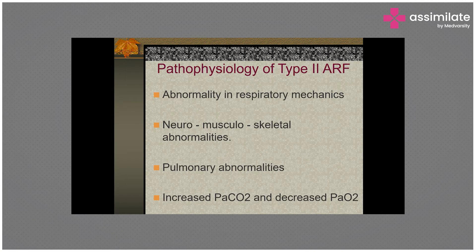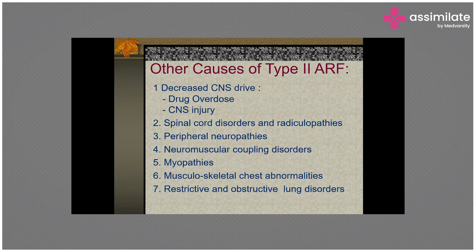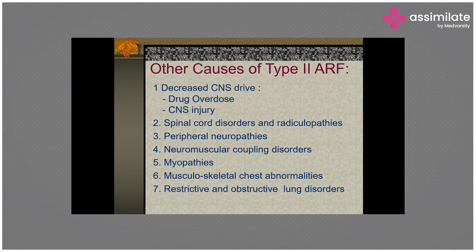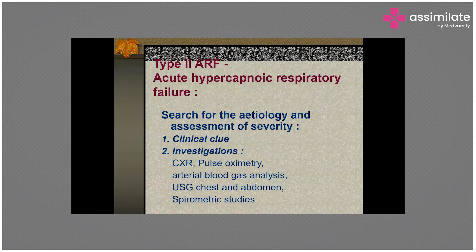Post-operative ICU patients with incomplete reversal of muscle relaxants can develop respiratory weakness causing Type 2 failure. Sedative overdose — opioids or benzodiazepines — causes CNS depression and CO2 retention. Head injury, traumatic brain injury, and raised intracranial pressure lead to inadequate breathing. Spinal cord disorders, radiculopathies, peripheral neuropathies, neuromuscular disorders, musculoskeletal chest abnormalities, and restrictive or obstructive lung disorders can all cause Type 2 respiratory failure.